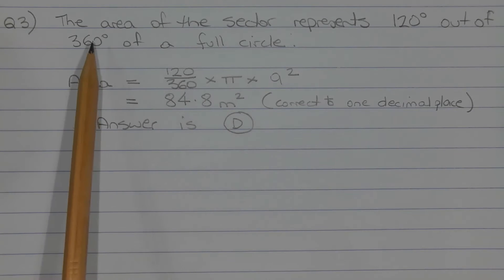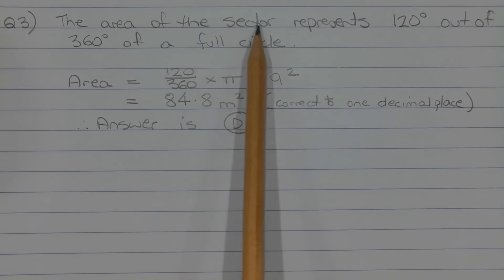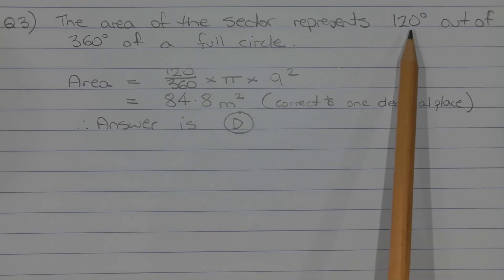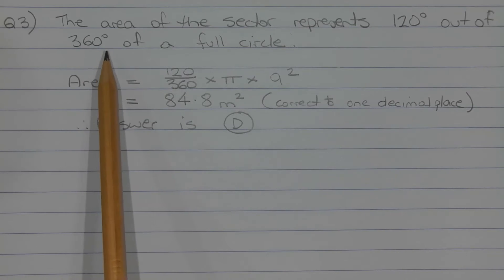A full circle has 360 degrees. Hence the area of the sector represents 120 degrees out of 360 degrees of a full circle.